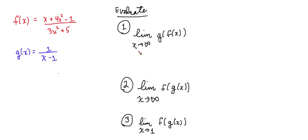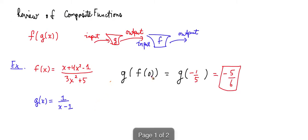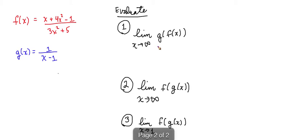Let's start out with number one. What is the limit of g of f of x as x approaches infinity? Just as we did last time, when we're substituting in an input, we consider the inside function — in this case f — and we leave the outside function alone until we get the output. So we look at the inside function, get the output, and then feed that into the outside function. So what is happening to the output of f as x approaches infinity?